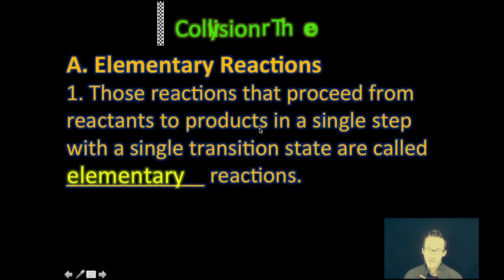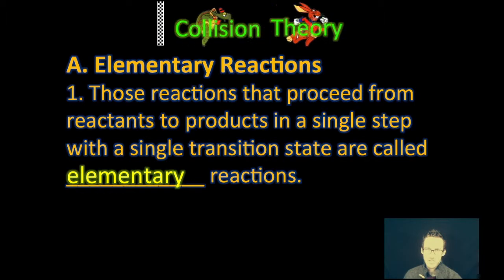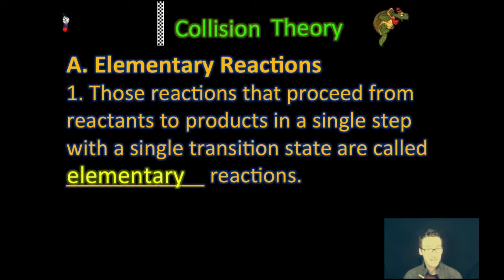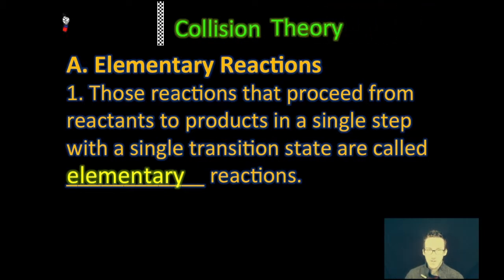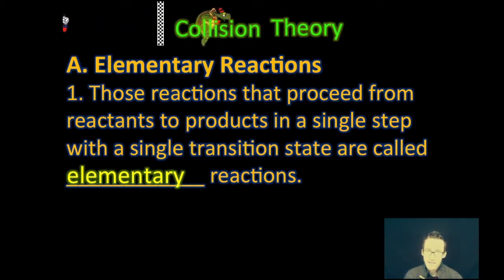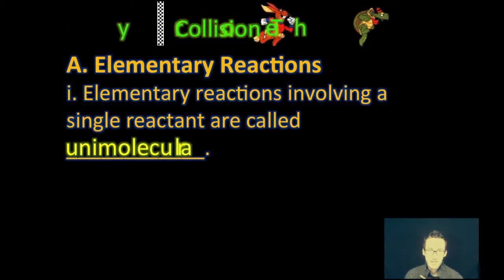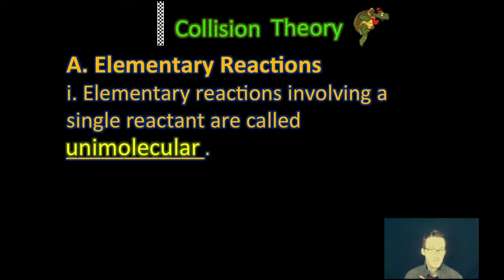So first some quick notes. As we talk about collision theory, which is going to be the focus for today's video, we need to understand that we're going to be focusing on what are called elementary reactions. These are reactions that proceed from reactants to products in a single step with just a single transition state. If we have an elementary reaction with a single reactant, that type of elementary reaction is known as a unimolecular reaction.